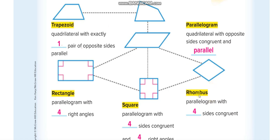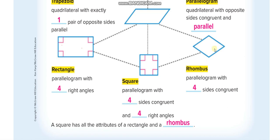The last type is the rhombus, which is also a parallelogram. It has opposite sides parallel and all four sides congruent — like a square. But the difference between a square and a rhombus is that a rhombus has no right angles, while a square has four right angles. So a square has all the attributes of both a rectangle and a rhombus.